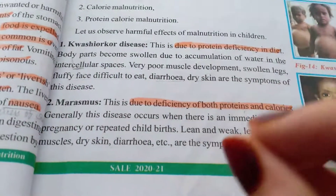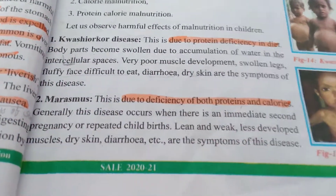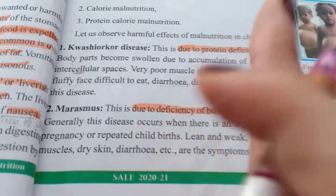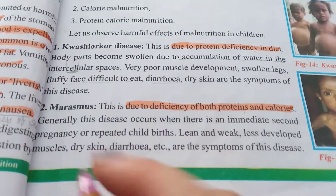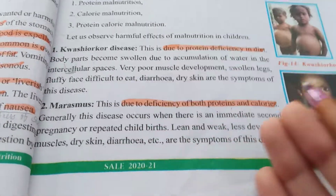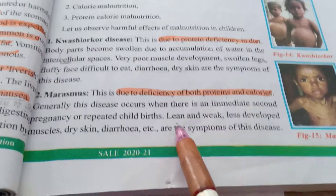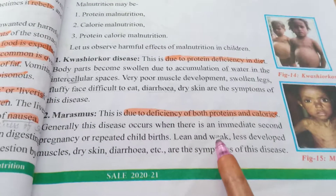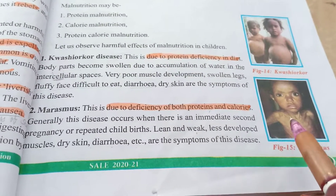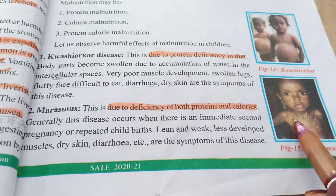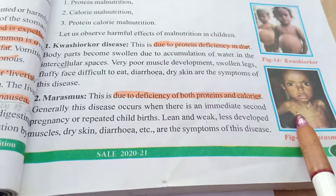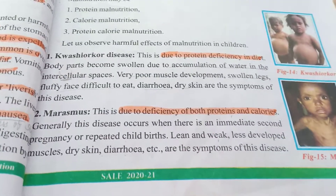These diseases generally occur in cases of immediate second pregnancy or repeated childbirth — when a mother gets pregnant again very soon after the first birth. Children affected by Marasmus show symptoms such as weakly developed muscles, dry skin, and diarrhea. As you can see in this picture, this child is very weak with less muscle development and a flat, thin body.